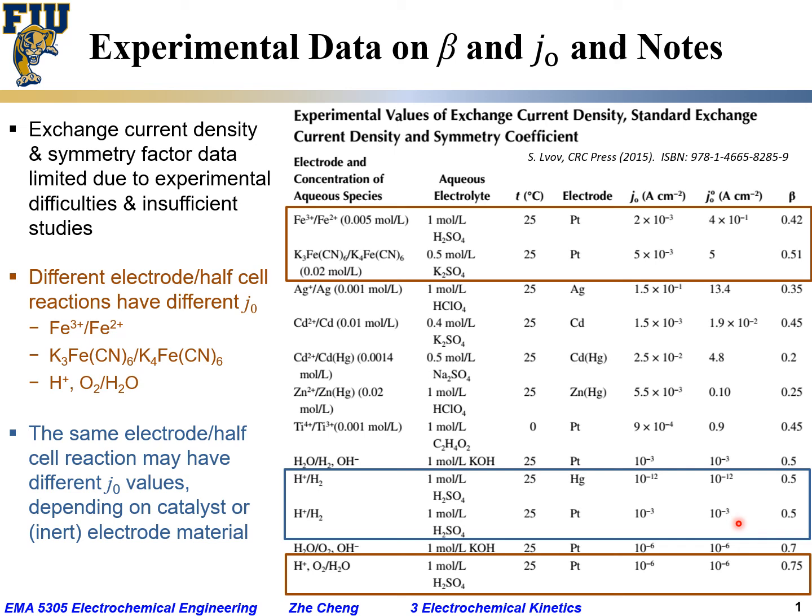A billion times difference in exchange current density when it is happening over mercury electrode, which is very, very fast. How fast? By a billion times faster if the same reaction is occurring over inert platinum electrode versus mercury liquid electrode. So these are the two features for the values, especially exchange current density values for different reactions.